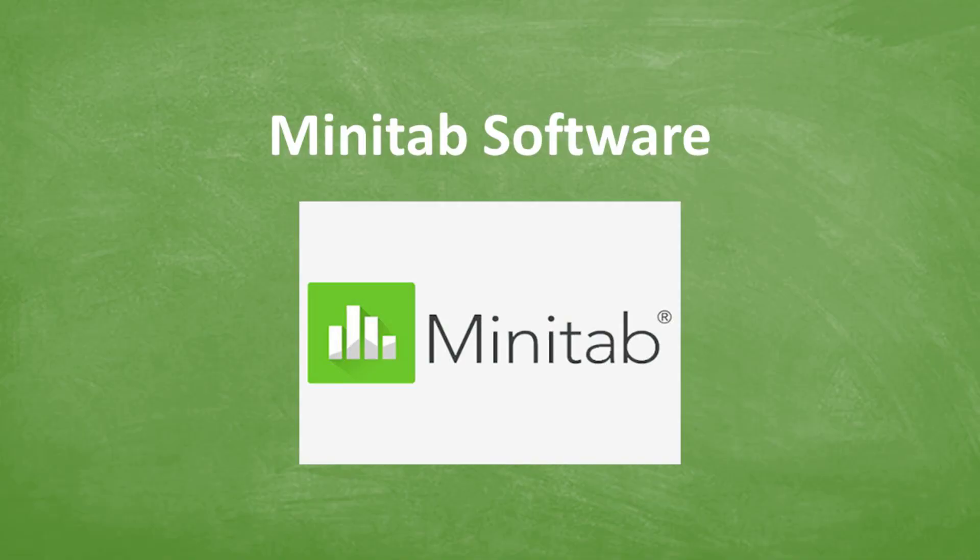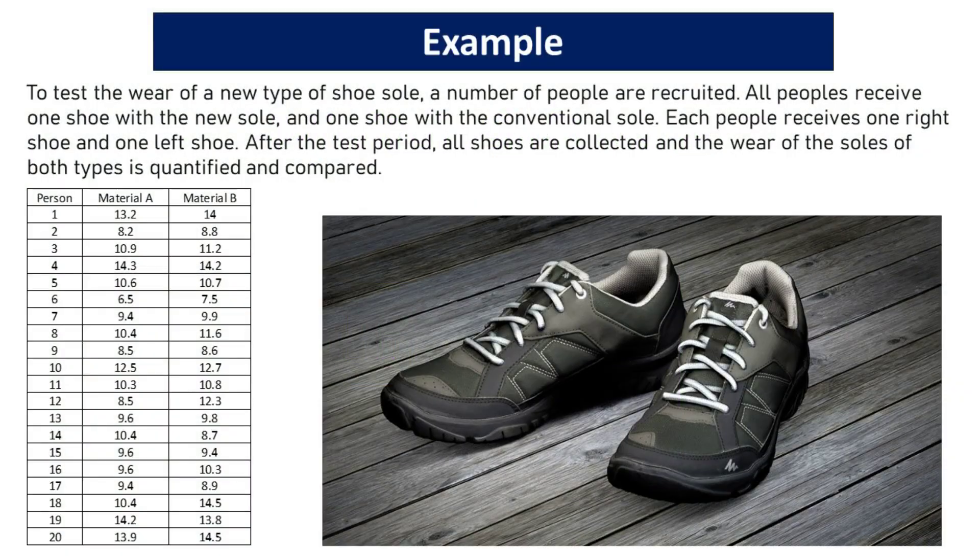Minitab software provides a comprehensive toolkit for statistical analysis, from hypothesis testing to predictive modeling. To test the wear of a new type of shoe sole, a number of people are recruited. All peoples receive one shoe with the new sole, and one shoe with the conventional sole. Each people receives one right shoe and one left shoe. After the test period, all shoes are collected and the wear of the soles of both types is quantified and compared.